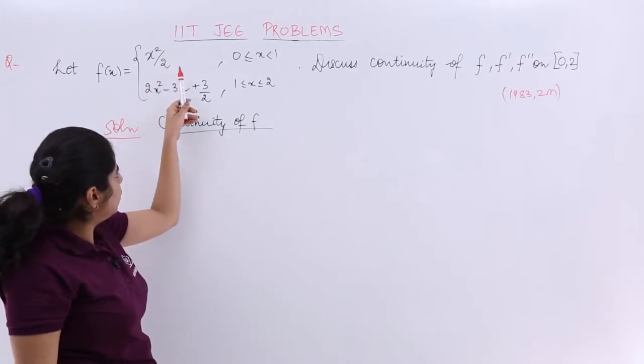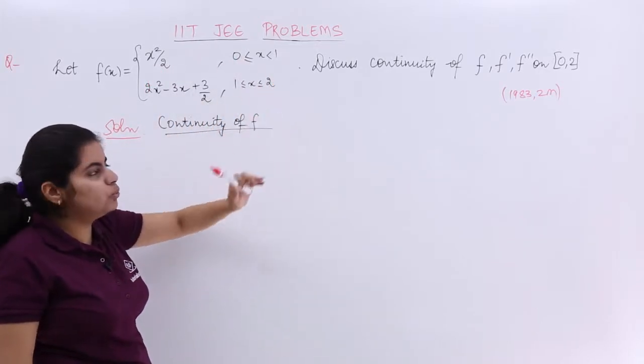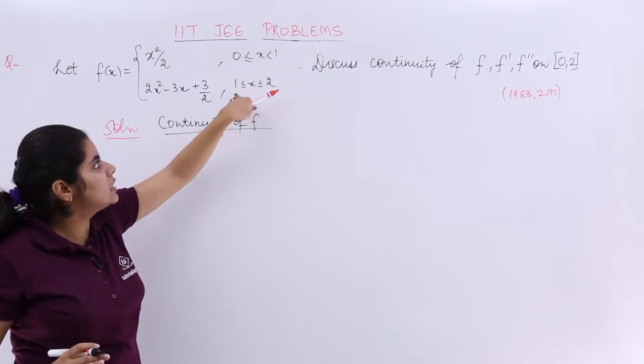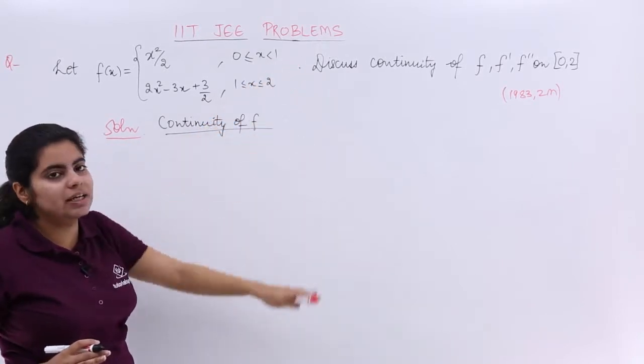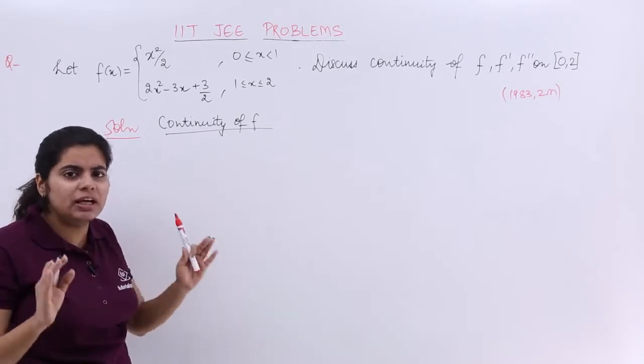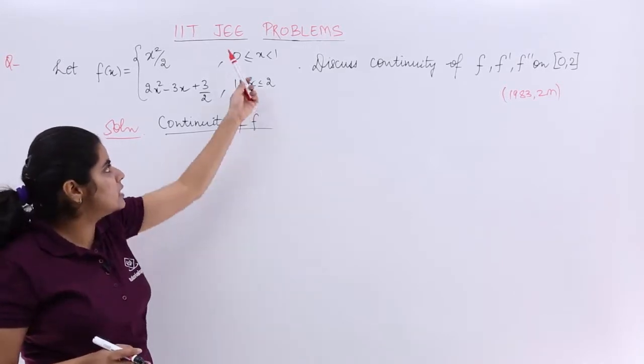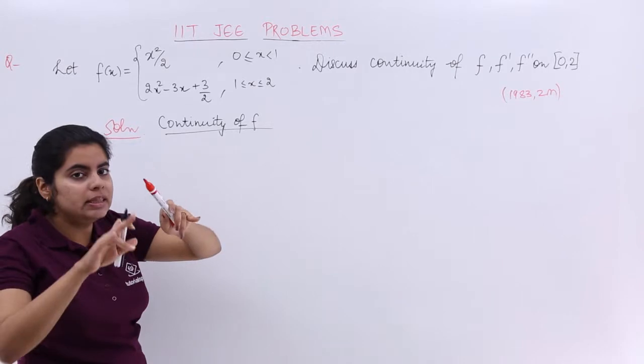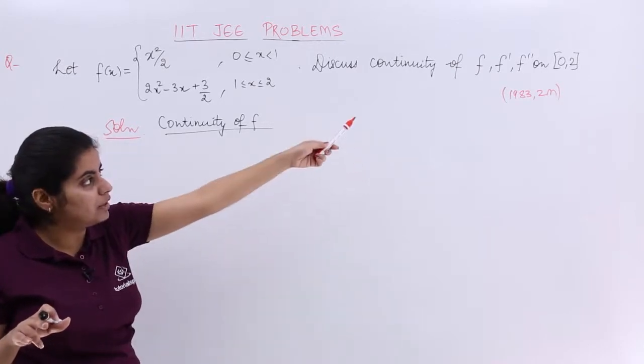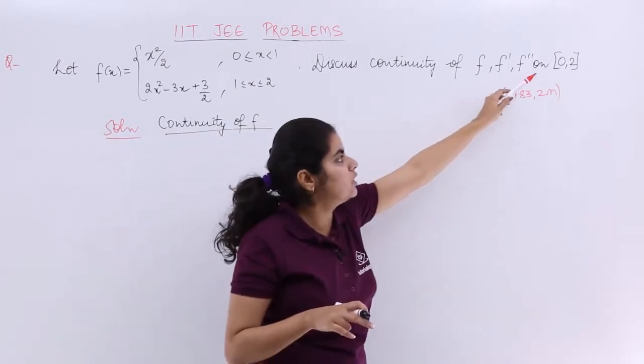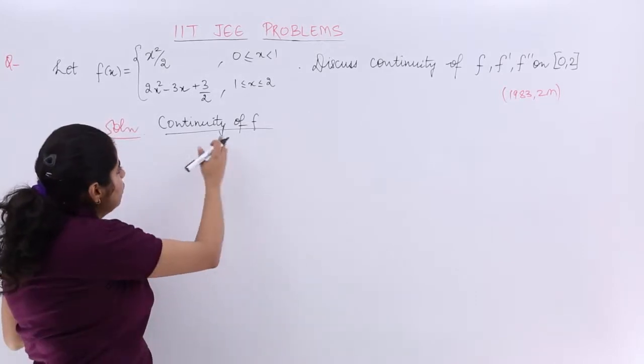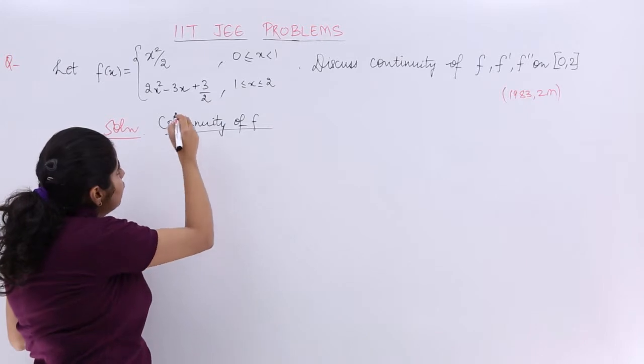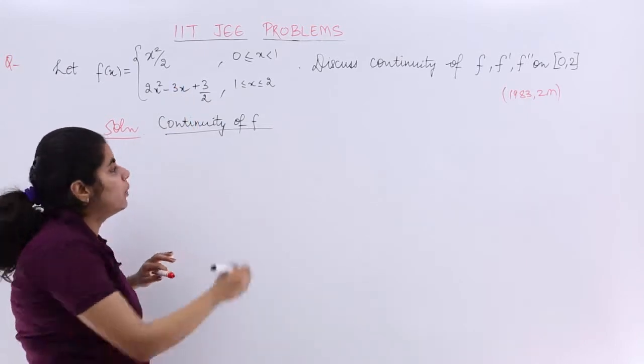And continuity of f: see, 0 and 2 are the outside things. 1 is included. Here x is less than 1, here x is greater than. So we have to basically check the continuity at 1 only because at 0 and 2 there is no problem. In the interval [0,2], we are bothered about 1 because the rest is fine.